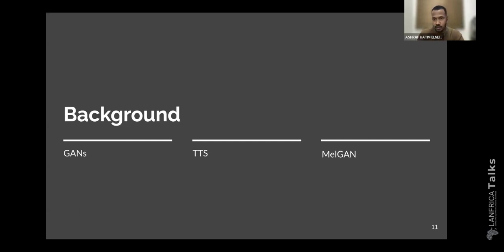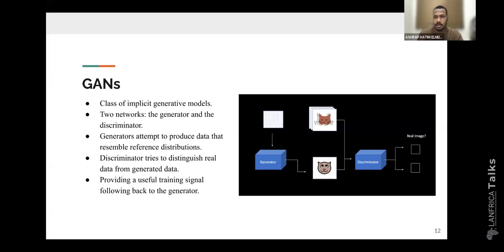For this presentation, I will try to mention only the levels of detail that are important for it to continue smoothly. I need to talk about the generative adversarial network, the text-to-speech architecture, and particularly the MelGAN architecture. The generative adversarial network is a class of implicit generative models trained by adversarial means between two networks: the generator and the discriminator. The generator tries to produce data that resembles the reference distribution, while the discriminator tries to distinguish between real data and generated data. The discriminator provides a useful signal that flows back to the generator, which uses it to improve its weights.